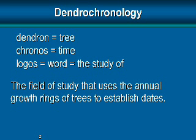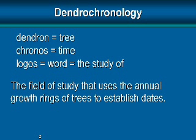Trees can't be determined by their height or their diameter, because height and diameter depend on how much water, sunlight, and nutrients a tree has gotten. So two trees of the same species in the same area can be greatly different in size and yet be the same age. So the best way to determine how old a tree is — not by its diameter, not by its height — but by its tree rings. That's what dendrochronology is: using these annual growth rings to establish dates.